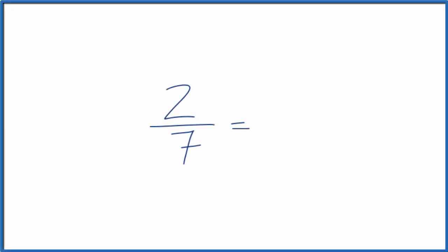Let's look at three equivalent fractions for 2 sevenths. That's 2 divided by 7. What we're trying to do is find fractions that have the same value, but they have different numerators and denominators.